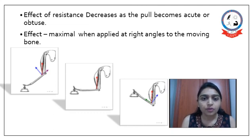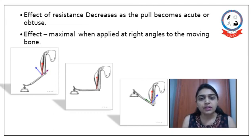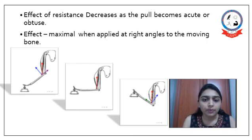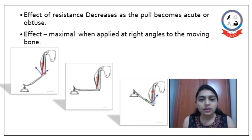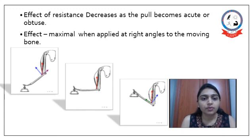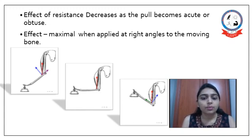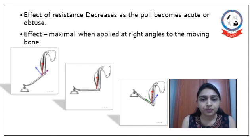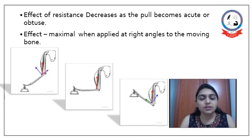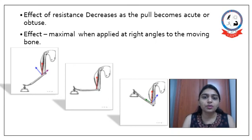The effect of resistance decreases as the pull becomes acute or obtuse. That means the effect is maximal when resistance is applied at right angle to the moving bone.